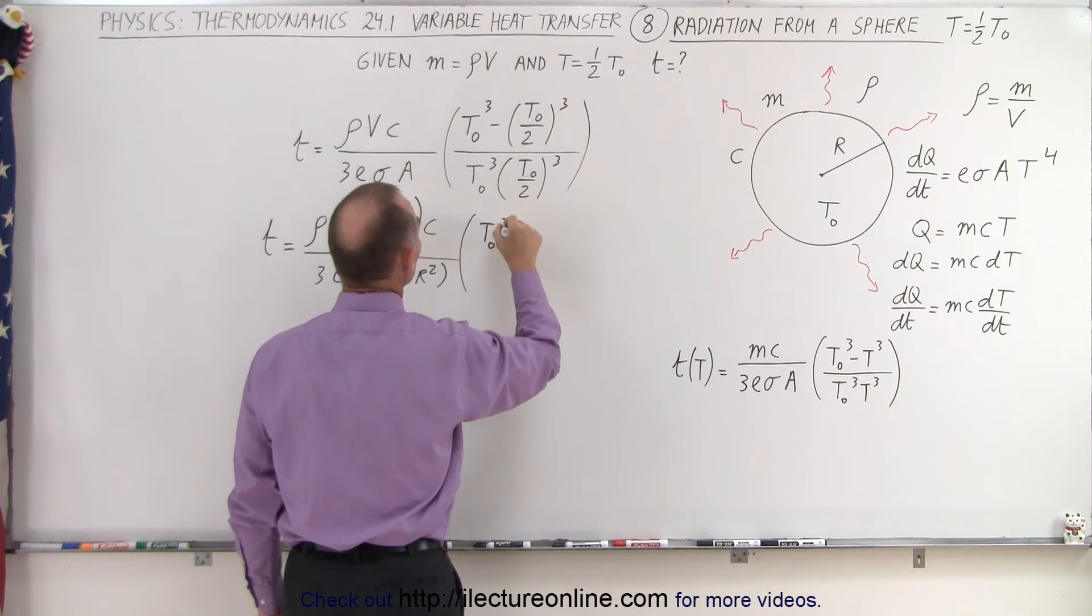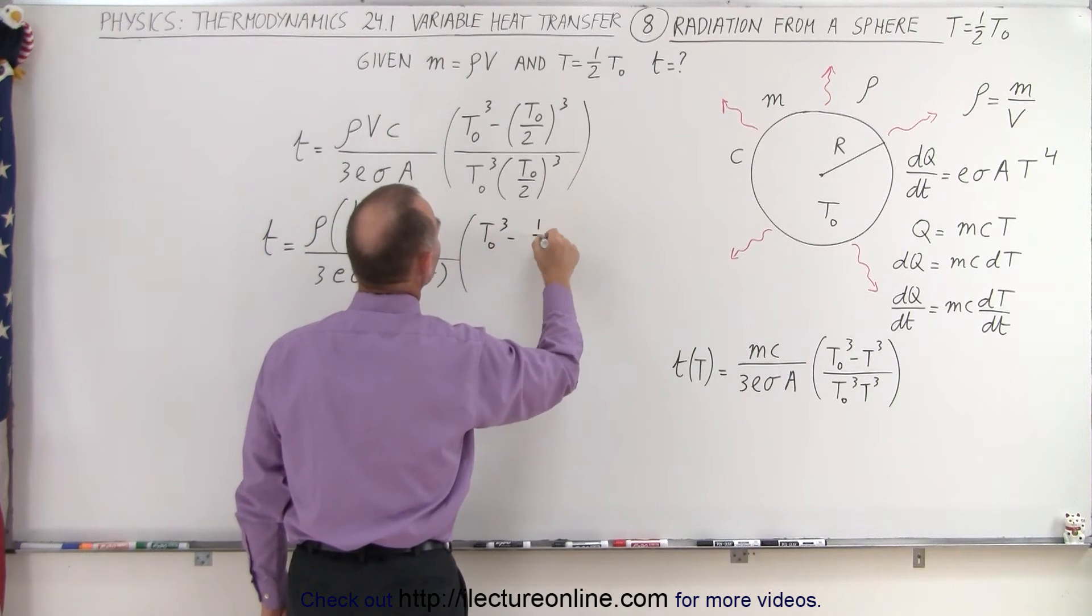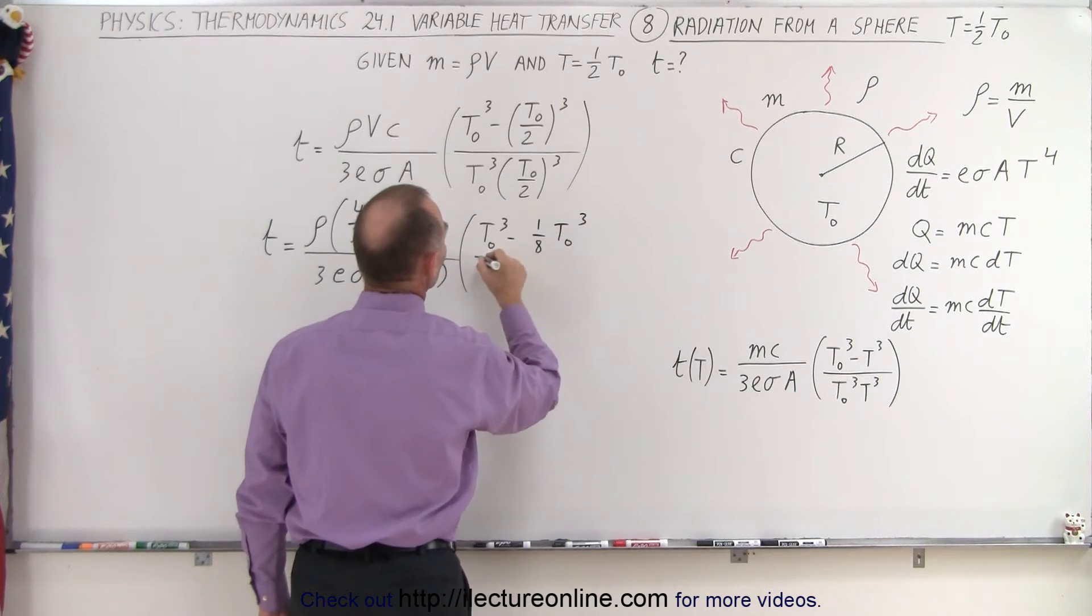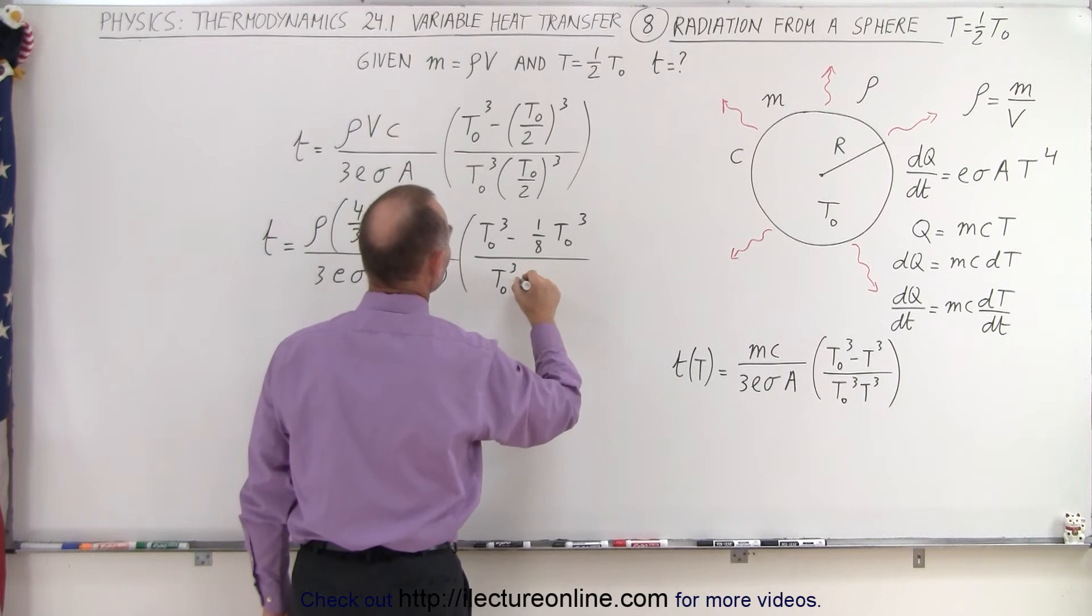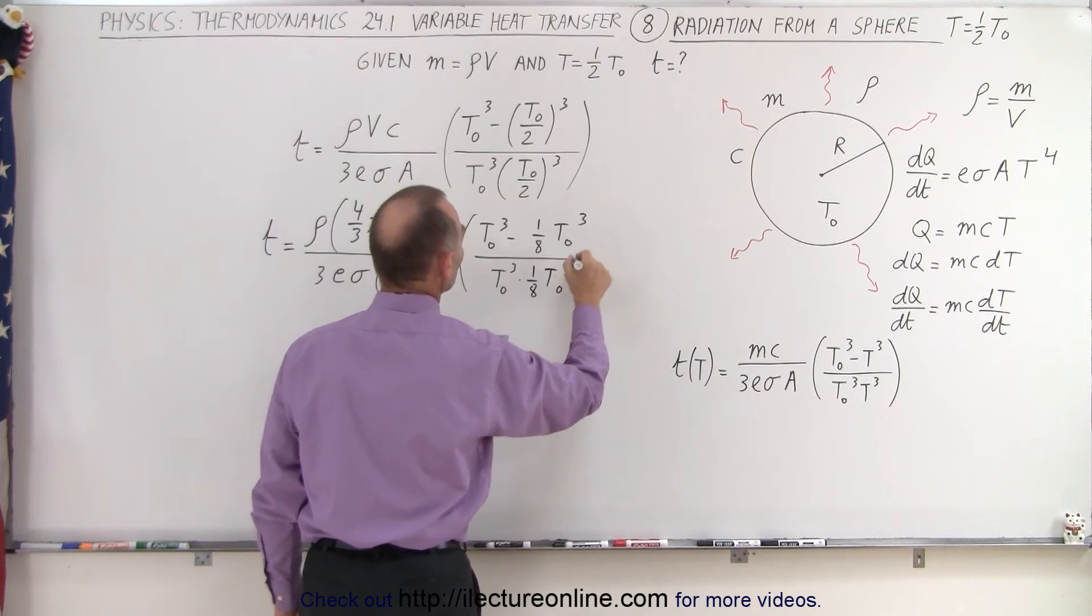So we have T sub-naught cubed minus 1/8 T sub-naught cubed, divided by T sub-naught cubed times 1/8 T sub-naught cubed.